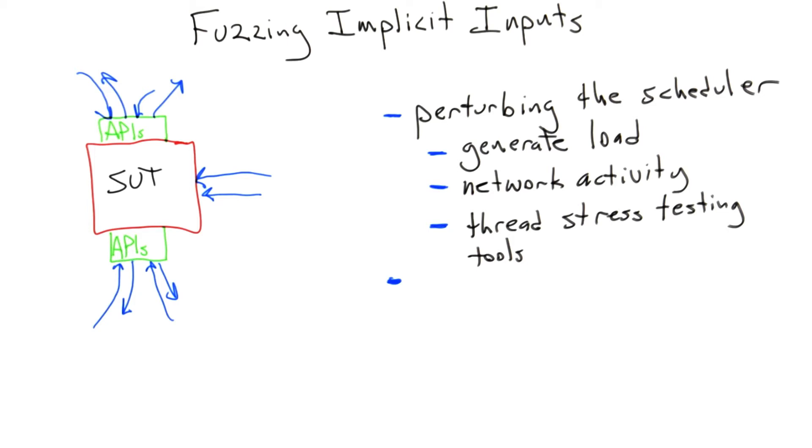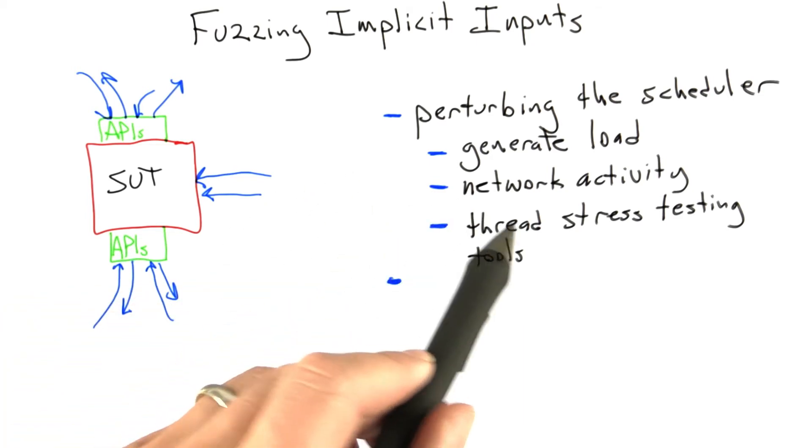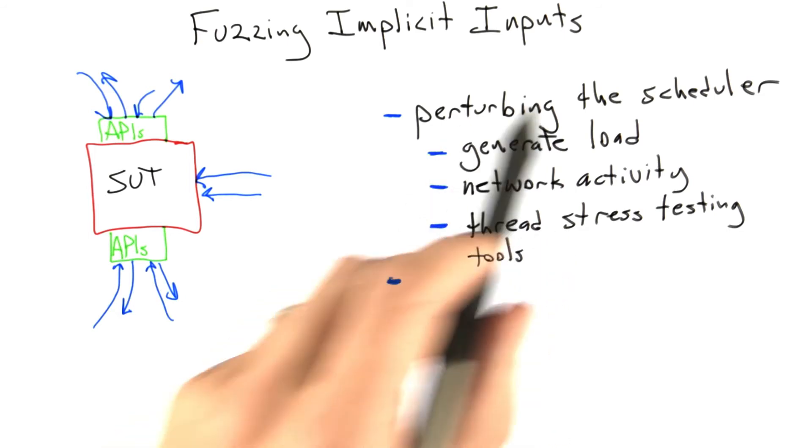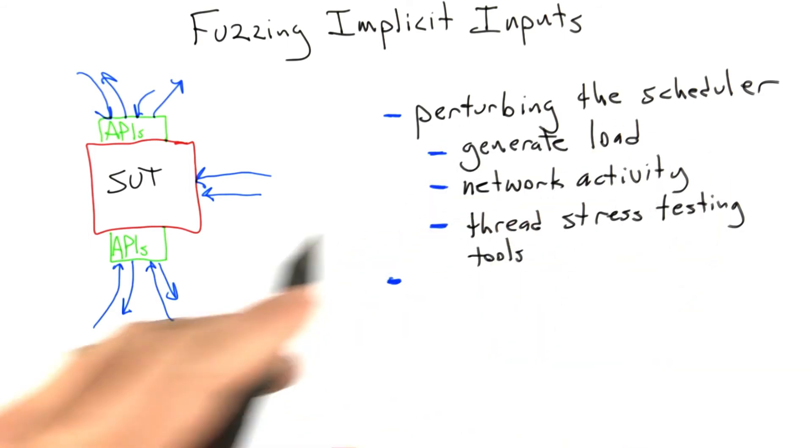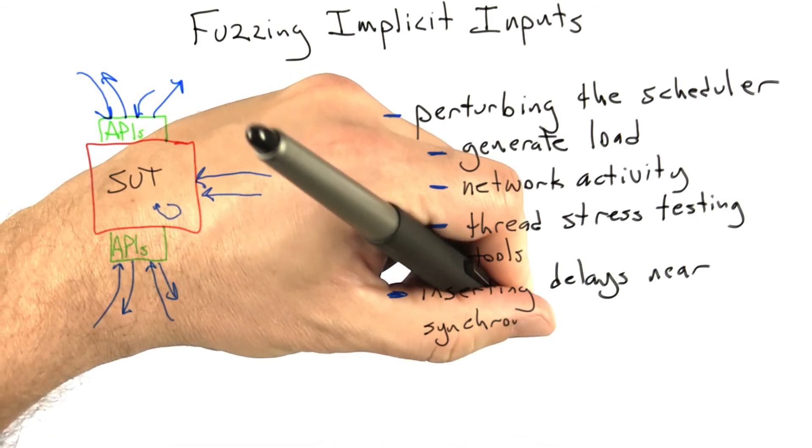There also exist specialized tools for stress testing of multi-threaded applications. If you have one available, it would be an extremely good idea to use it to help test your multi-threaded code. What I've just covered is external perturbations to the thread schedule. It's also possible for your software to introduce perturbations internally.